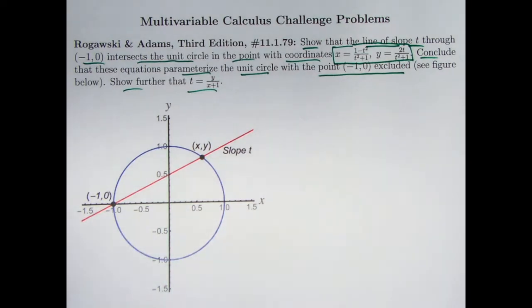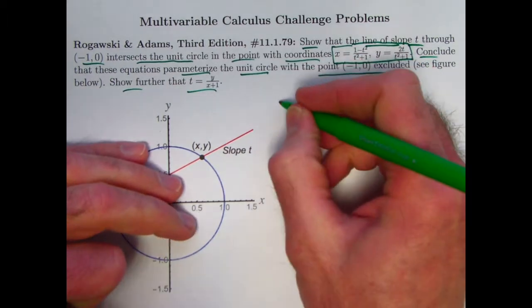We want to show again that the point of intersection of this line with slope t and going through the point (-1,0) with the unit circle is given by the point with these coordinates, and therefore these equations parametrize the unit circle with that point excluded, and show further ultimately that t also relates to x and y this way as well. Now the authors have really made it a little easier on us than they could have. They could have made us solve for x and y as functions of t. Instead, they made it easier. They gave these things to you.